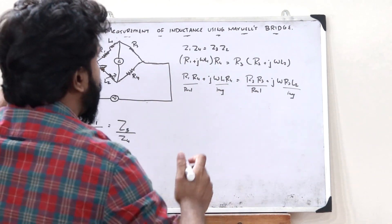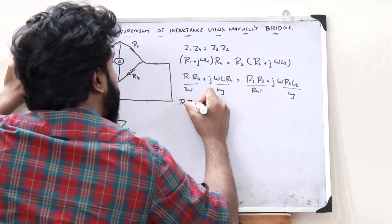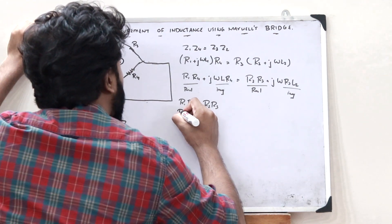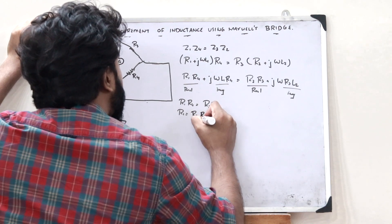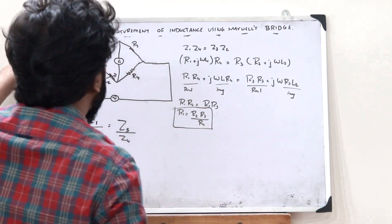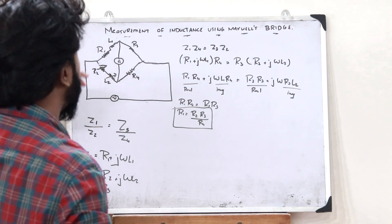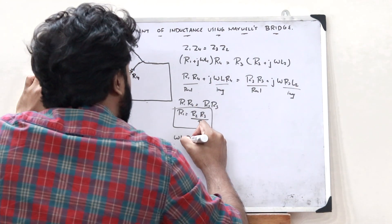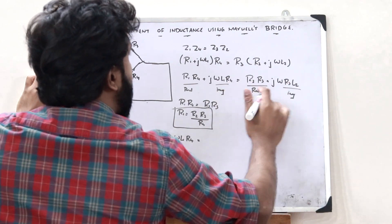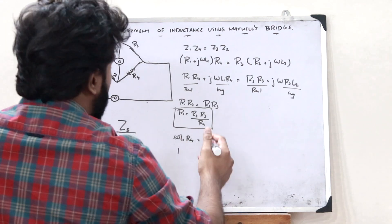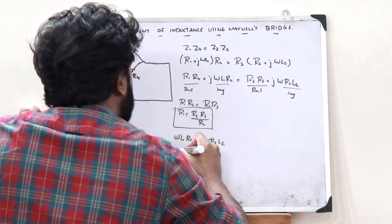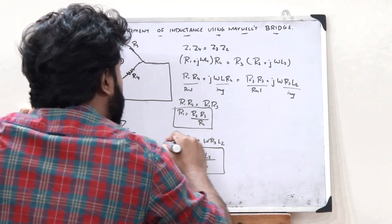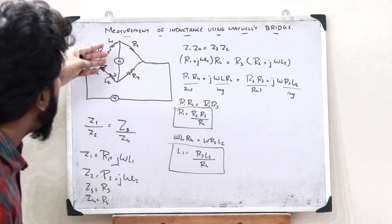On equating the real parts, we get R1 R4 equals R2 R3, and through this we can find the unknown resistance as R1 equals R2 R3 divided by R4. Similarly, by equating the imaginary parts, we get omega L1 R4 equals omega R3 L2. Since omega cancels, the value of the unknown inductance L1 equals R3 L2 divided by R4.